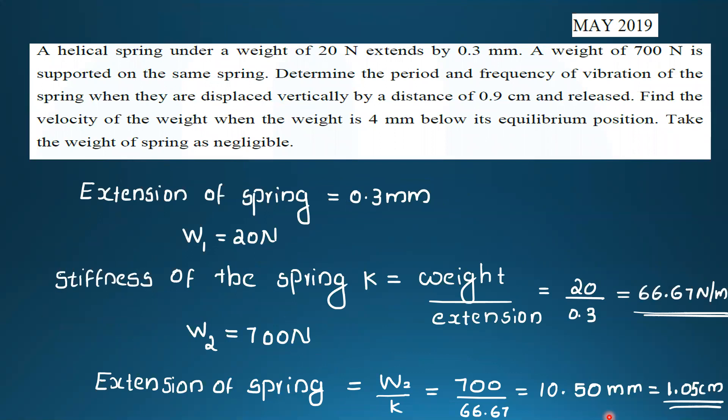Problem two: a helical spring under a weight of 20 Newton extends by 0.3 mm. A weight of 700 Newton is supported on the same spring. Determine the period and frequency of vibration when displaced vertically by 0.9 cm and released. Find the velocity of the weight when it is 4 mm below its equilibrium position. Take the spring weight as negligible.